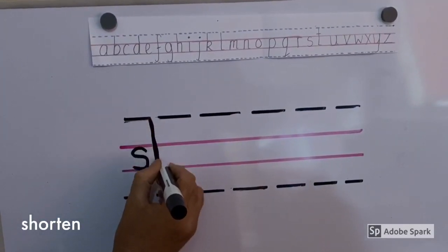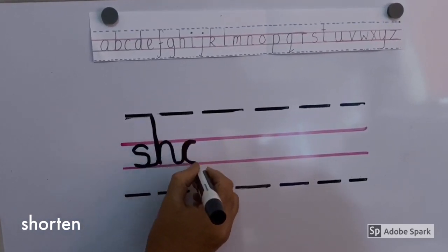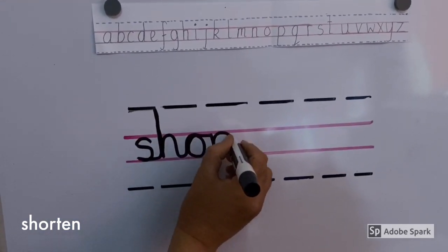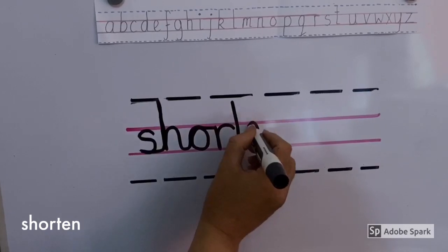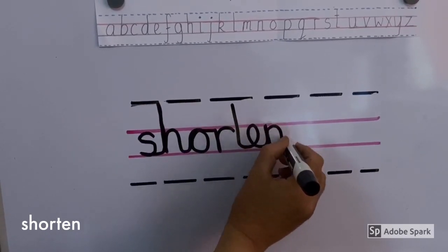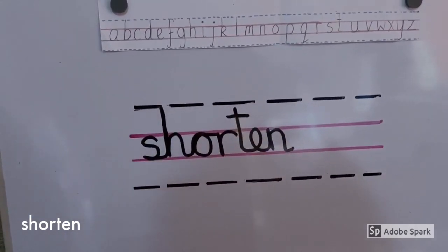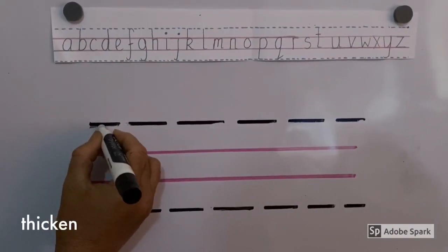Shorten. S, H, O, R, T, E, N. Shorten. Shorten means to make or become short or shorter. Shorten.